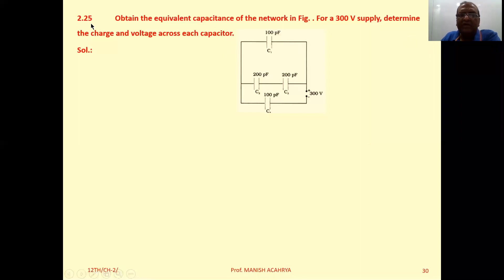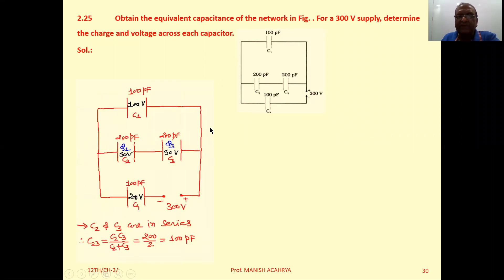Example 2.25: Obtain the equivalent capacitance of the network in figure. For 300 volt supply determine the charge and voltage across each capacitor. The circuit given to you has 4 capacitors.